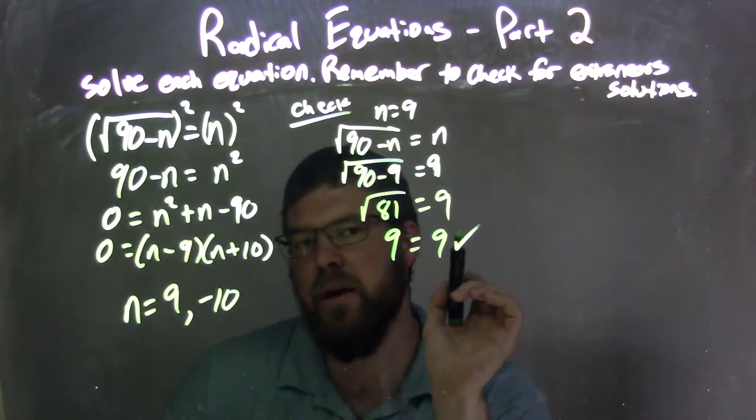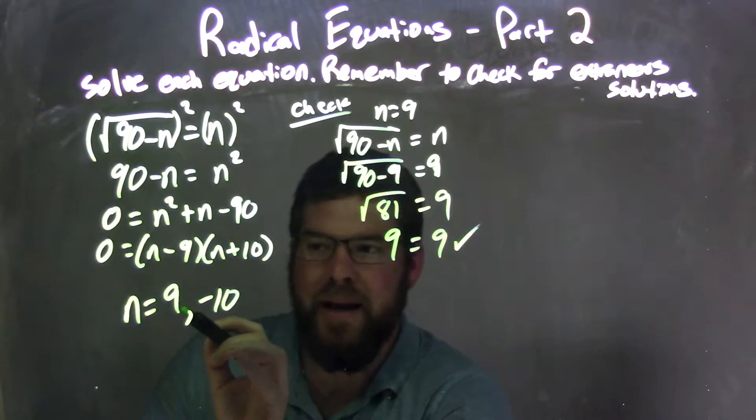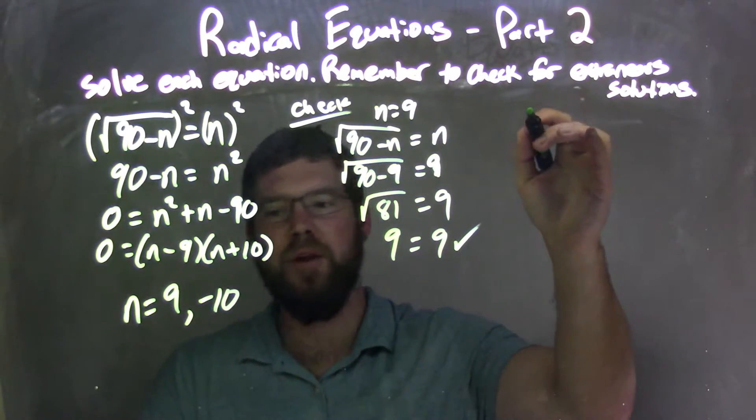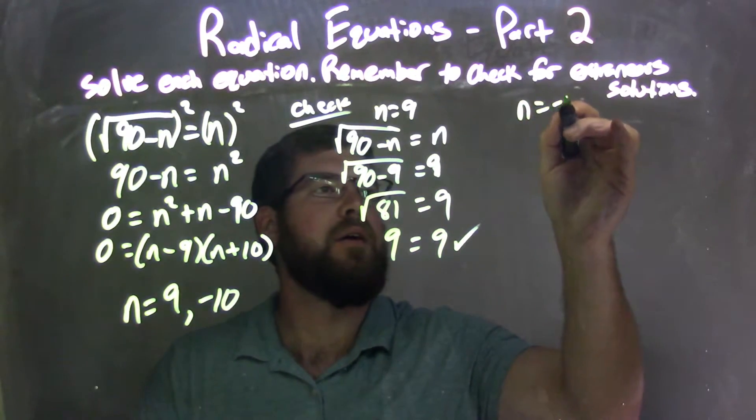Fantastic. Left and right hand side are equal, making this a true statement. We're good. It's a real answer. We got it. It's not extraneous. But we have two numbers. Let's check both of them. Negative 10.